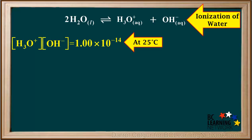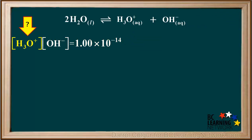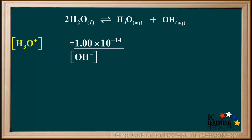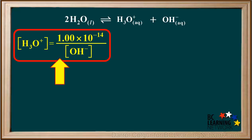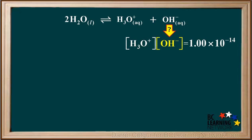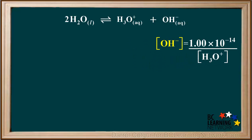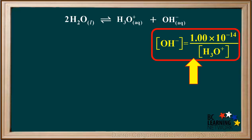Knowing the equation for the ionization of water and the fact that the concentration of hydronium times the concentration of hydroxide is 1×10⁻¹⁴ at 25 degrees, we can find the hydronium ion concentration in any aqueous solution if we know the hydroxide ion concentration, by rearranging this equation to solve for the concentration of H3O+. We divide both sides by the concentration of OH- and tidy up to get this equation. We can also find the concentration of OH- in any aqueous solution given the concentration of H3O+ by rearranging this equation to solve for OH- concentration. We divide both sides by the concentration of hydronium and tidy up, and we are left with this equation.